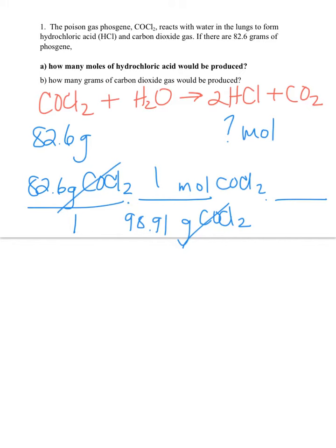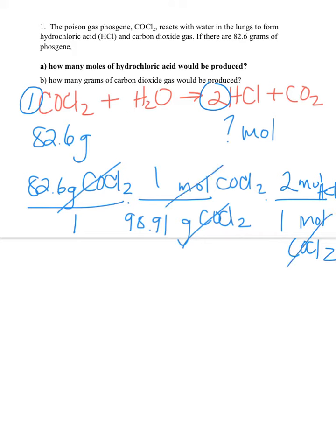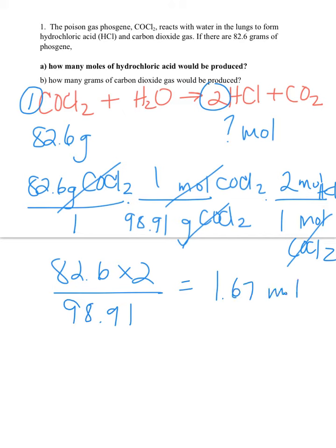Next, we're ready to do our stoichiometry. We don't want moles of COCl2 — we want moles of HCl. So let's cancel our moles of COCl2 and go to moles of HCl. There are two moles of HCl for every one mole of COCl2 according to our balanced chemical equation. Our moles of COCl2 are then canceled and we're left with moles of HCl — that's what we're looking for. Multiply across your numerators, multiply across your denominators, and solve. We get 1.67 moles of HCl, and that's our answer to question A.